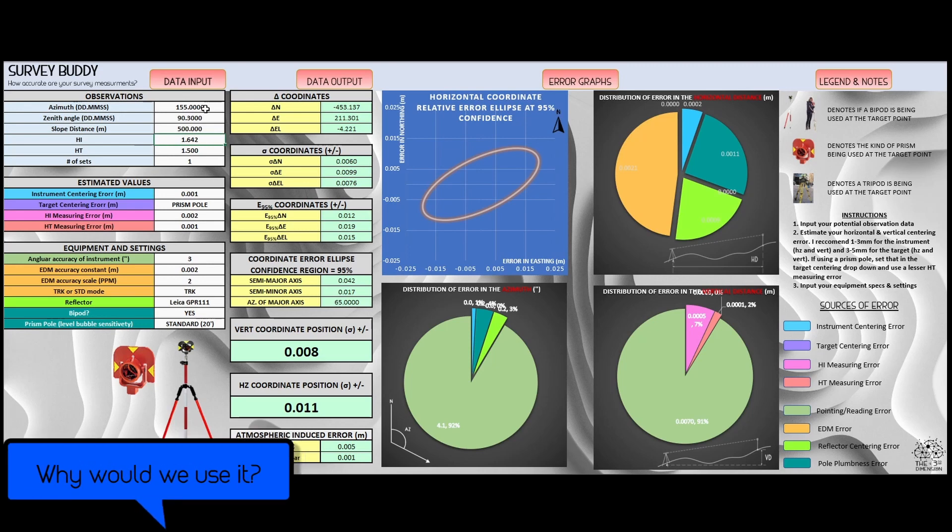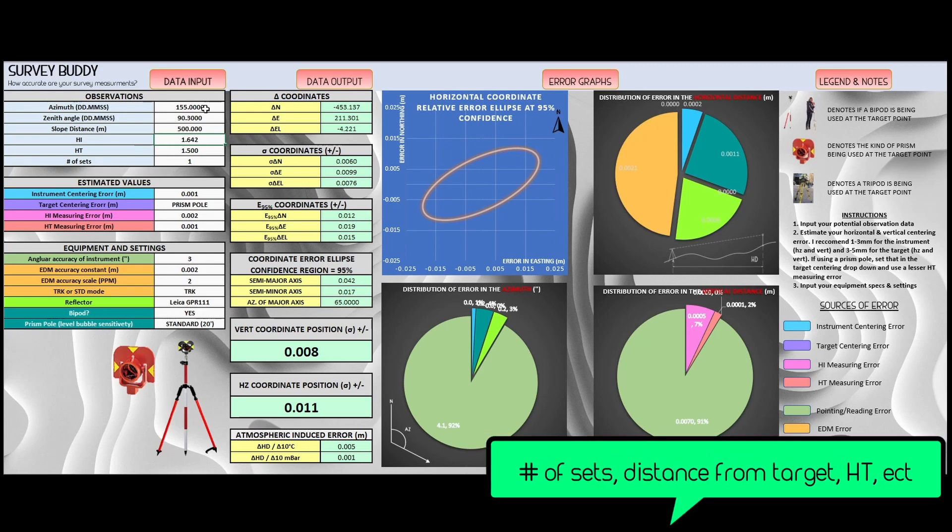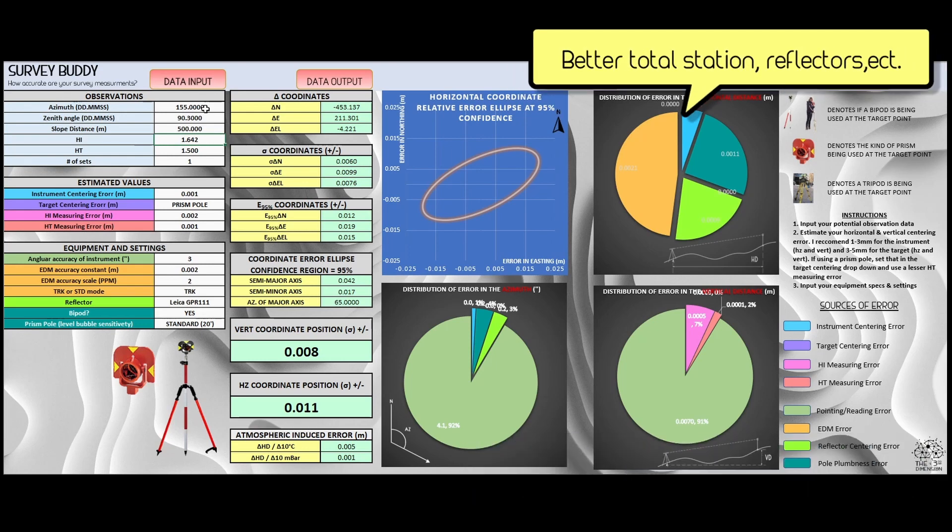So why would we want to use it? There are a few situations in which it would be pretty beneficial to use. Say if a client has a specified precision of what he needs laid out and gives that to us, say five mils for example, we can determine if we need to alter our field procedures or the equipment we're using to meet that precision.